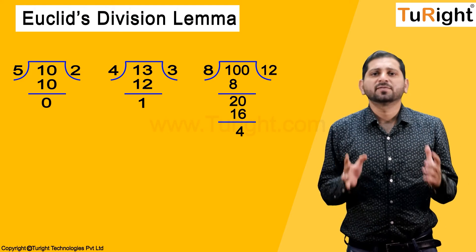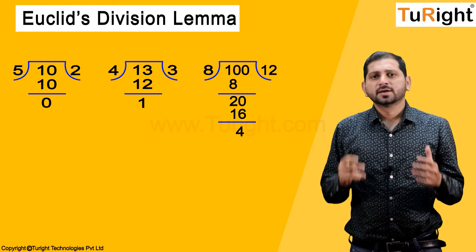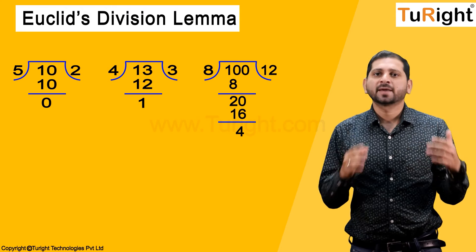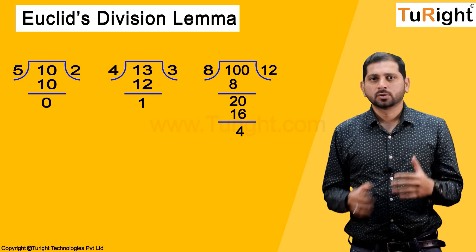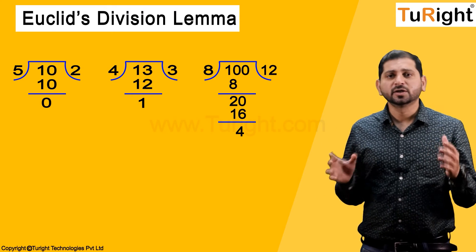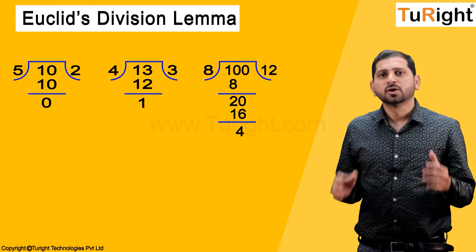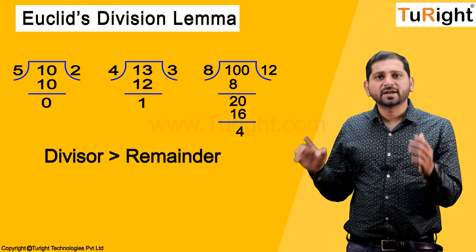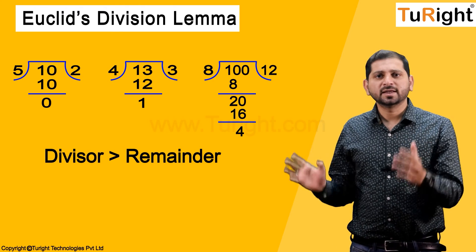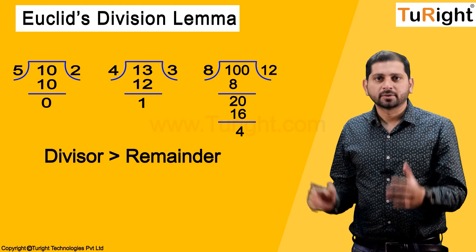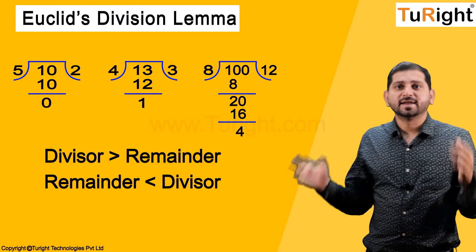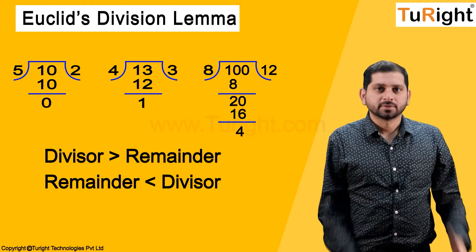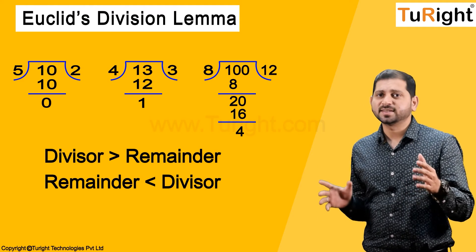From all these examples we have learned that sometimes the remainder becomes 0 and sometimes non-zero. One important thing to remember: the divisor is always greater than the remainder — the remainder is always less than the divisor.